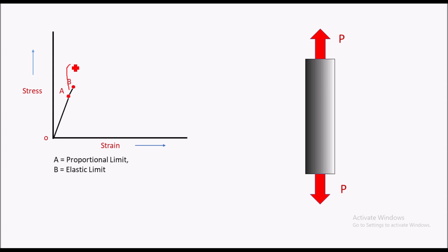In region AB, this specimen will behave in an elastic manner, meaning that if we remove the load at point B, then the material will regain its original shape and size. That means it will get back to its original length, capital L, if we remove both loads.